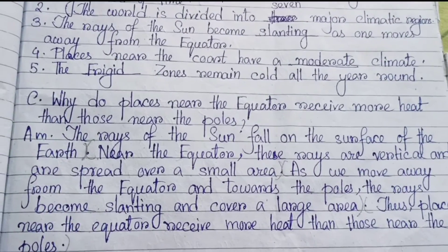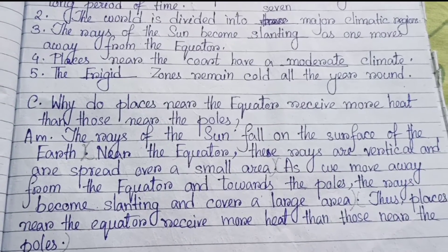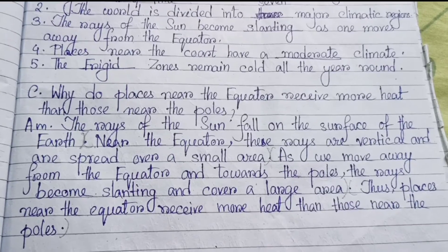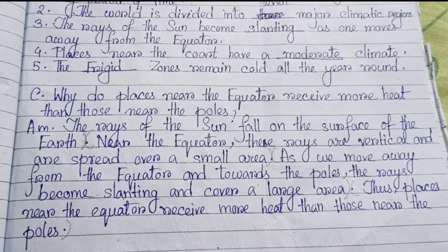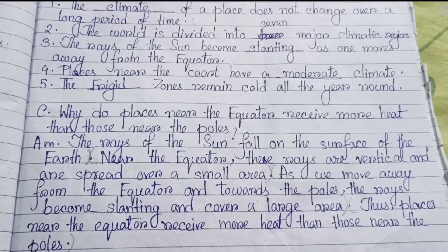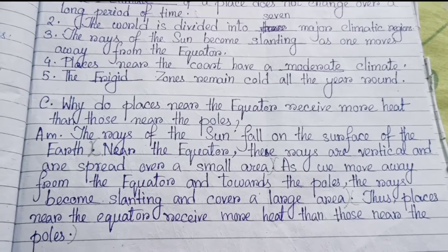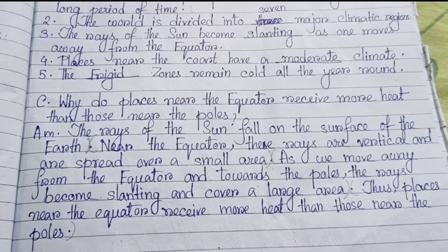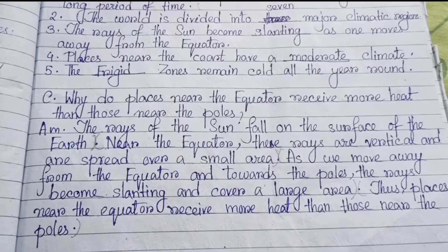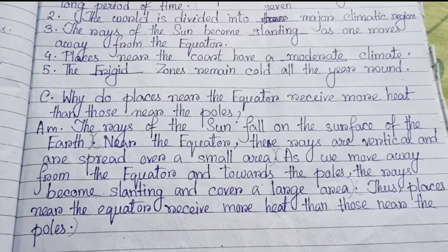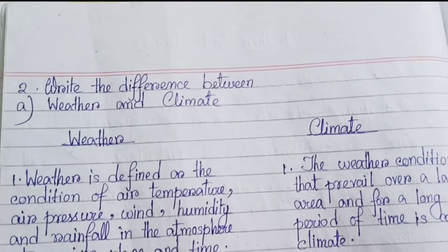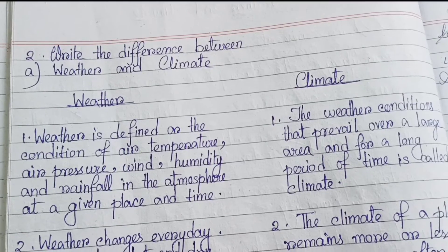Next we have some question answers from the chapter. Number one: Why do places near the equator receive more heat than those near the poles? The rays of the sun fall on the surface of the earth near the equator — these rays are vertical and spread over a small area. As we move away from the equator and towards the poles, the rays become slanting and cover a large area. Thus, places near the equator receive more heat than those near the poles.